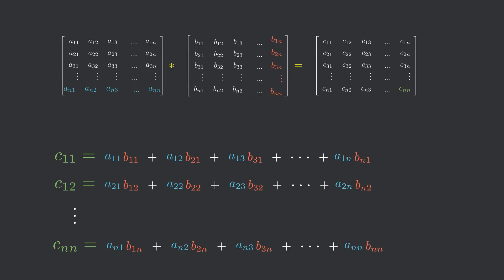So there are a total of n-square elements in the resultant matrix, and each element requires n multiplications and n-1 additions. So the final complexity would be big O of n-cube.